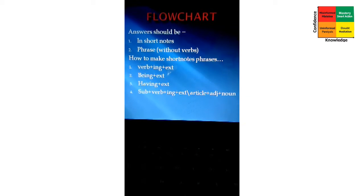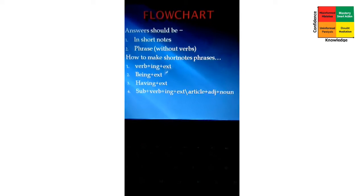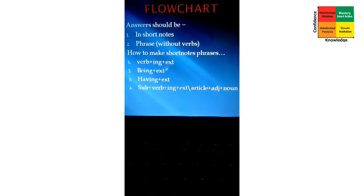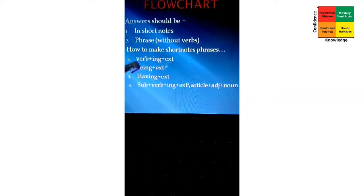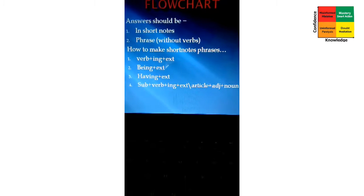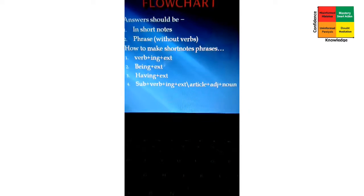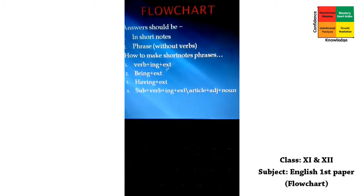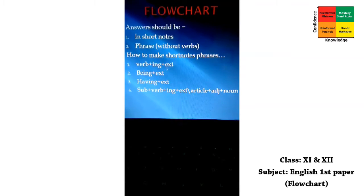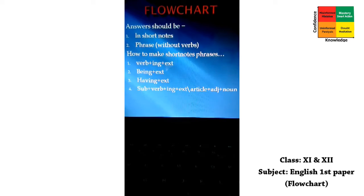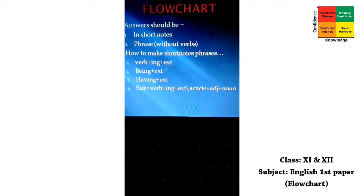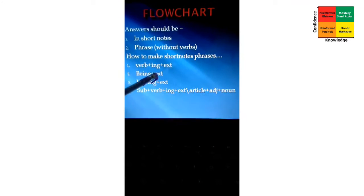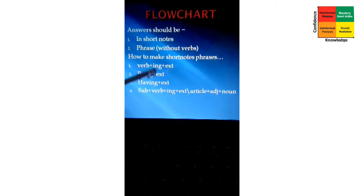We have to remember these four rules. By remembering only these four rules, we can easily write a flowchart. Number one: verb plus -ing plus extension. To write a phrase, we should not give any subject. Number two: being plus extension — that is, the rest of the part of the sentence.